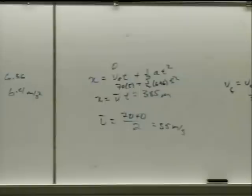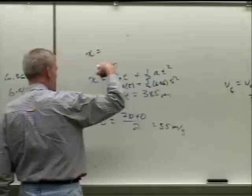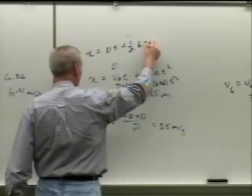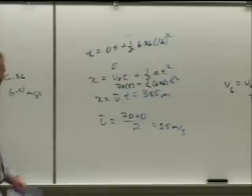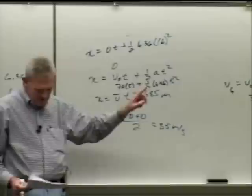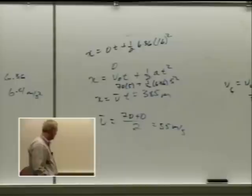Some of you started from the very beginning: x equals 0 times t plus one-half times 6.36 times 16 squared, giving the overall displacement. Some mixed up 11 and 5 and didn't quite get it, but were on the right track.